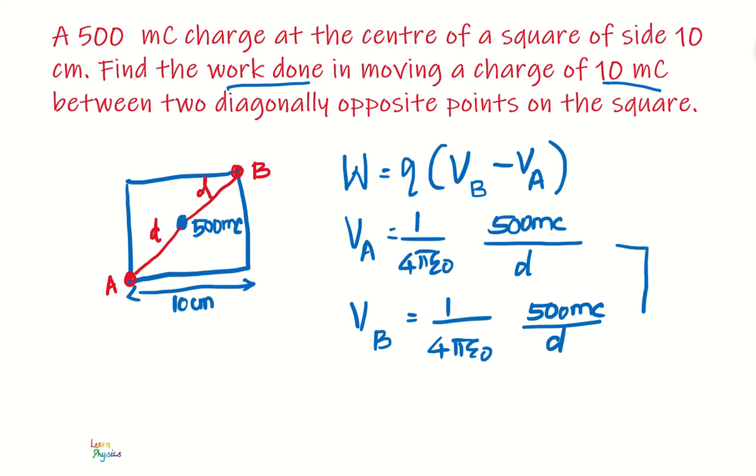Now if you see, these two are equal. So VA is equal to VB, which means that the work done is zero. Work done in taking a charge from point A to point B, they both are at the same potential, so it is zero.